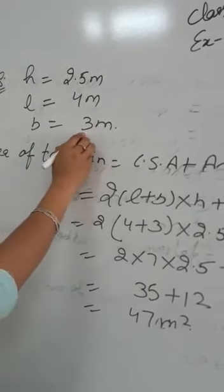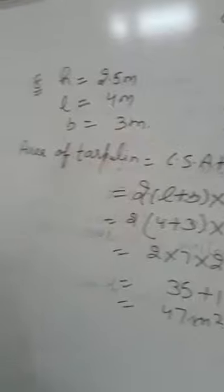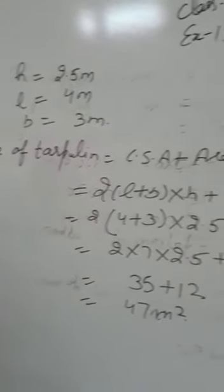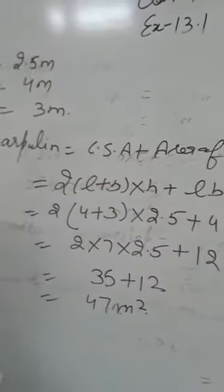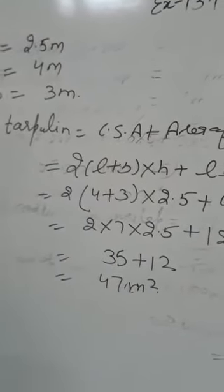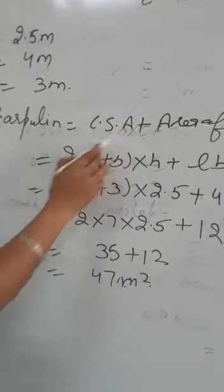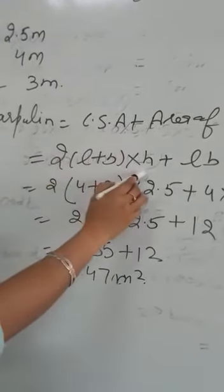Then we take length as 4 and breadth as 3. Now area of tarpaulin we have to find. For this we will use the formula curved surface area plus area of top. Because we have no requirement of area of bottom.